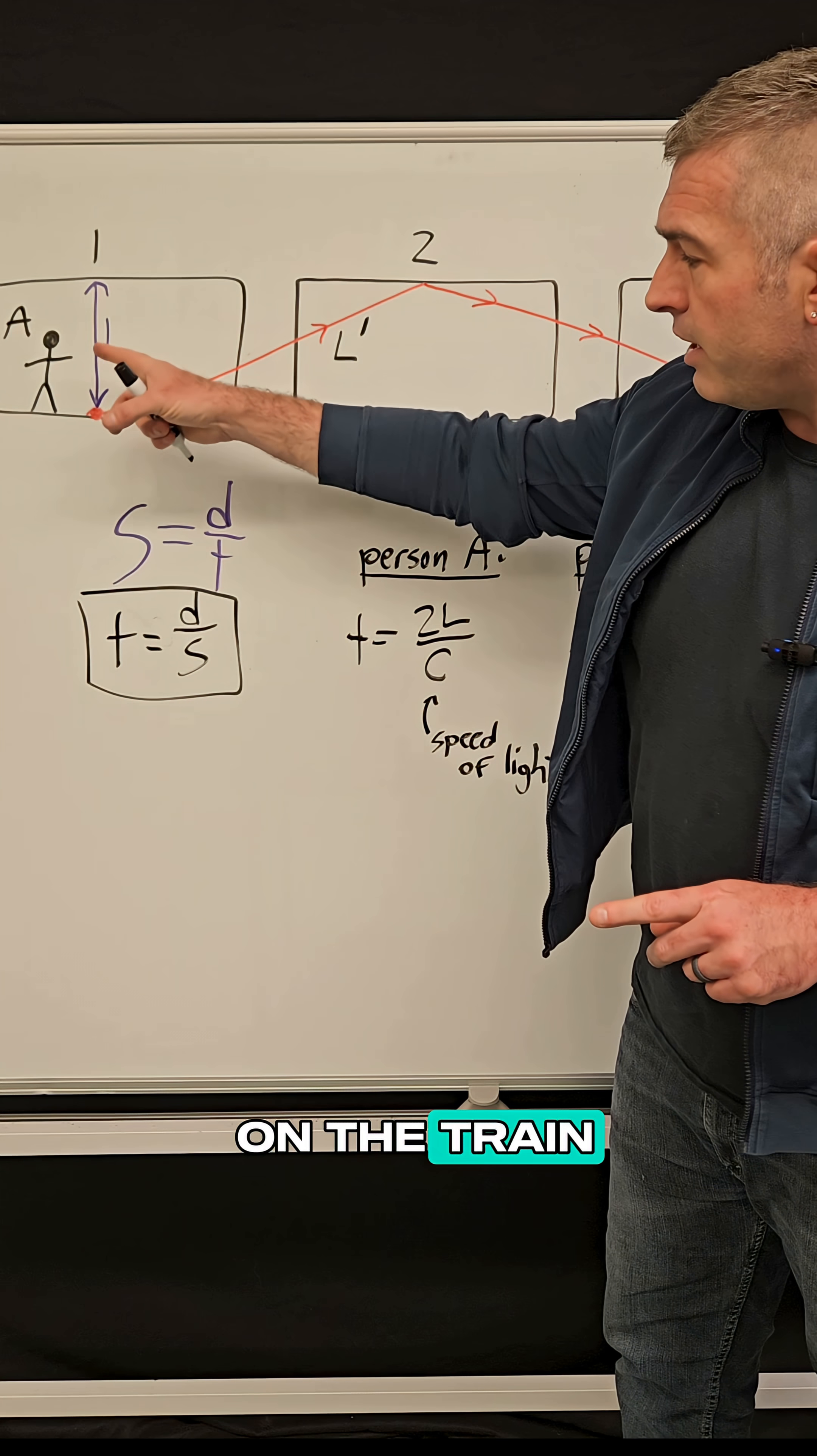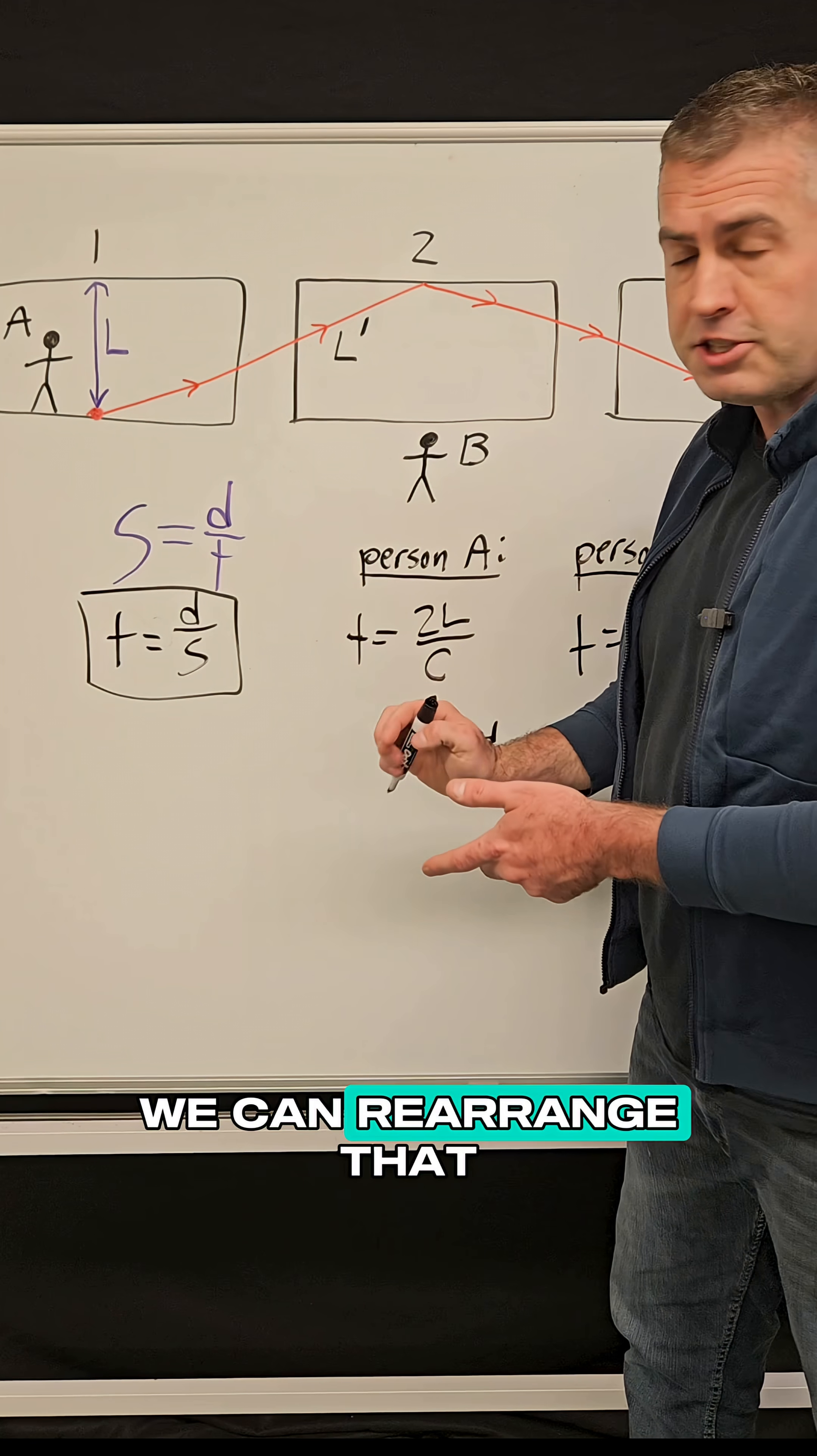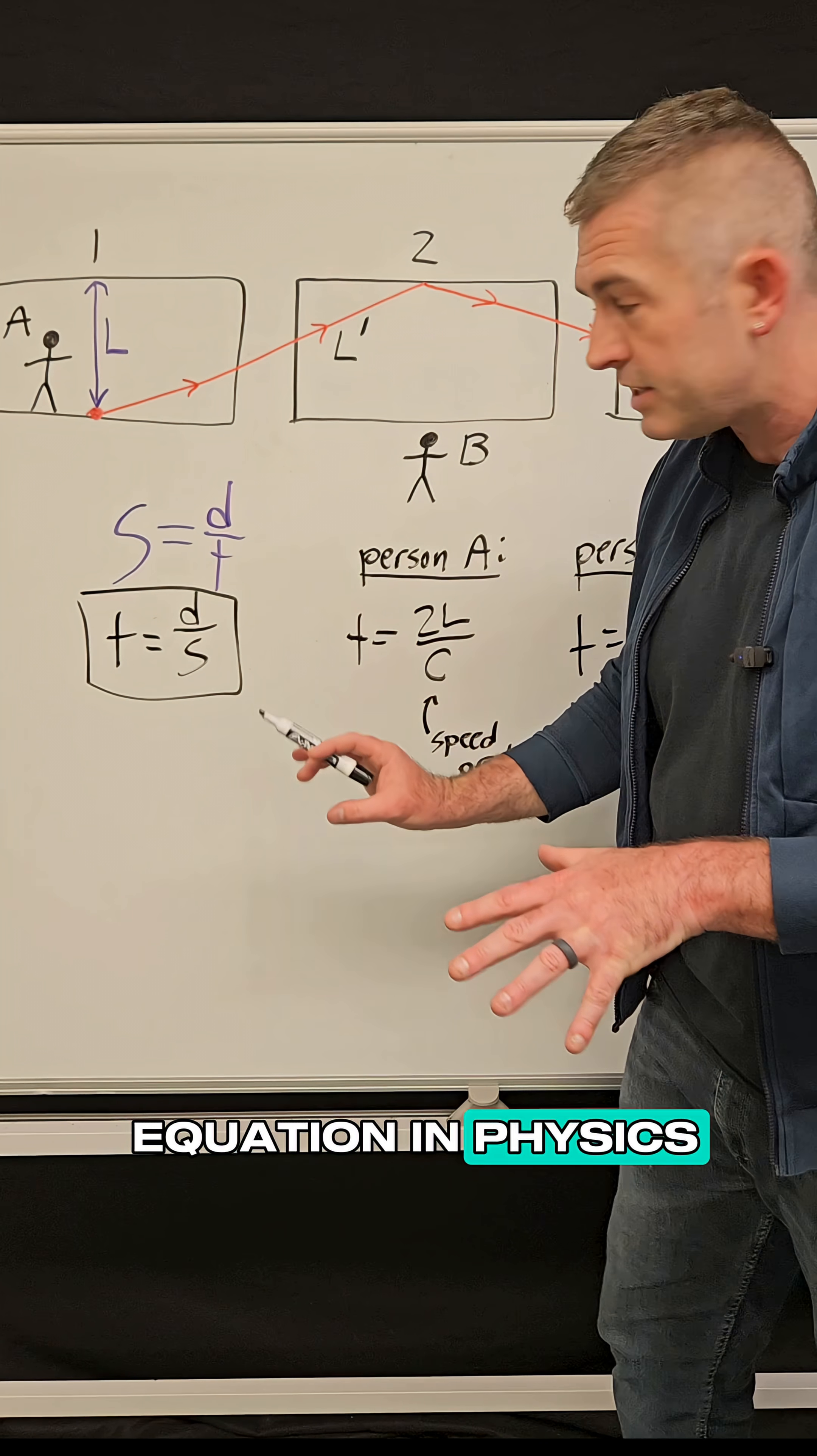For the person standing on the train, we know that speed is just equal to distance divided by time. And we can rearrange that and write it as time equals distance divided by speed. So that's just an equation in physics.